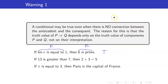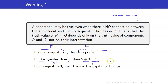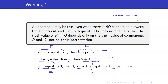Remember that an implication will only be false when you have true premise and false conclusion. If 13 is greater than 7, then 2 plus 3 is equal to 5: 13 is greater than 7 is true, 2 plus 3 equals 5 is true, so this is true. If π is equal to 3, that is false. The conclusion is Paris is the capital of France, which is true. We have false, true, so that still makes the entire statement true.